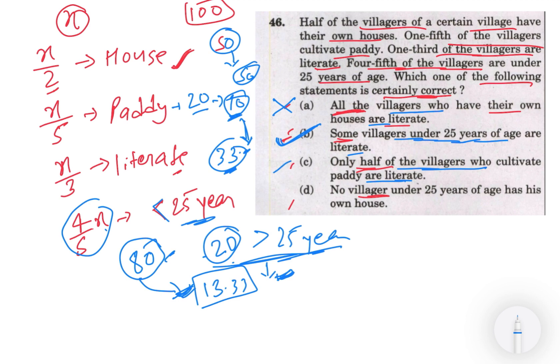Last hai - no villagers under 25 year of age has his own house. Yeh bhi condition galat ho gaya, kyunki hum dekhen kitna - 50 logo ke paas own house hai aur total hamara 80 hai pachis saal se kam hai. Agar yeh again 20 wala ratio leke chalenge ki agar 20 jo hai jo 25 saal se umar jinka jyada hai, agar unke paas apna house hai.